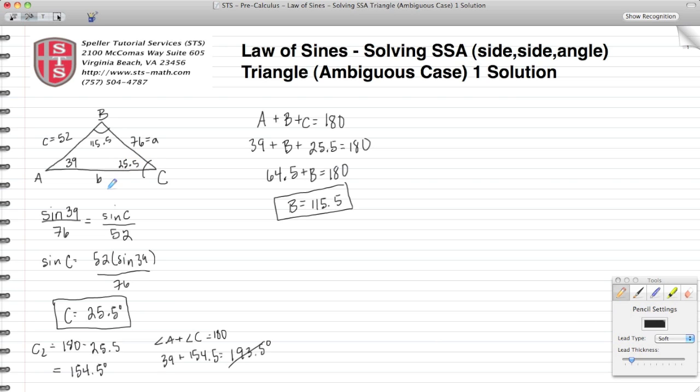To find that, again use the Law of Sines. We're going to take the sine of 115.5 divided by B—so the sine of angle B divided by its length—equal to the sine of 25.5 divided by 52.